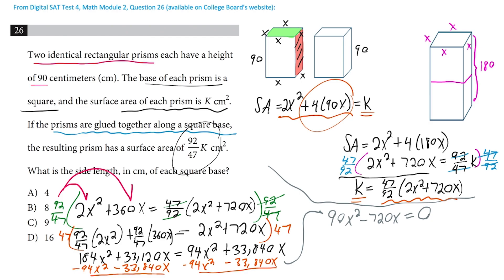And there are a couple of ways to proceed here. But let's just go ahead and add the 720x back to the opposite side. So we'll have 90x squared equals 720x. And how about we divide both sides by 90x. And we will get x because x squared divided by x is just x.